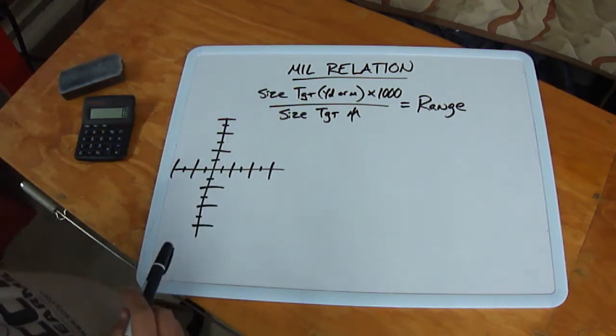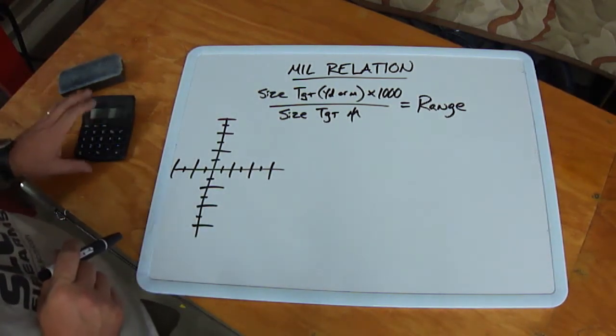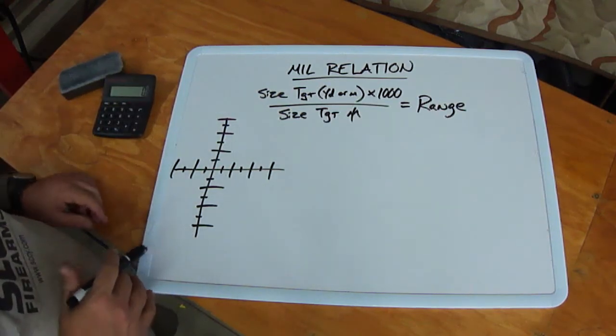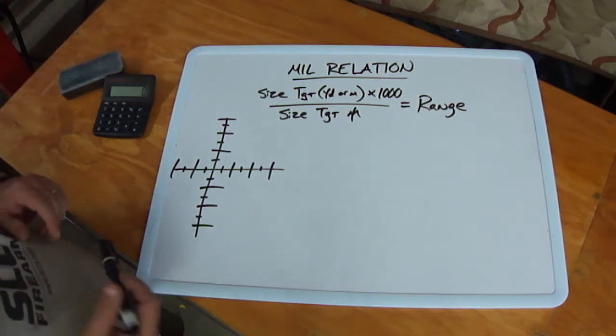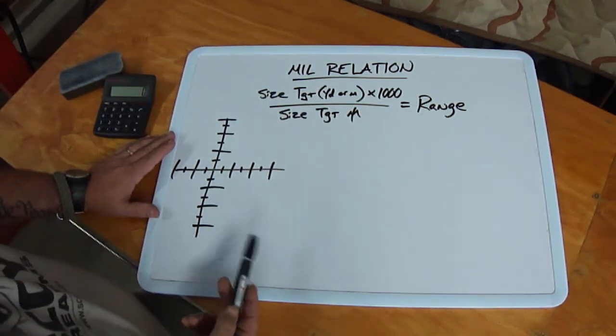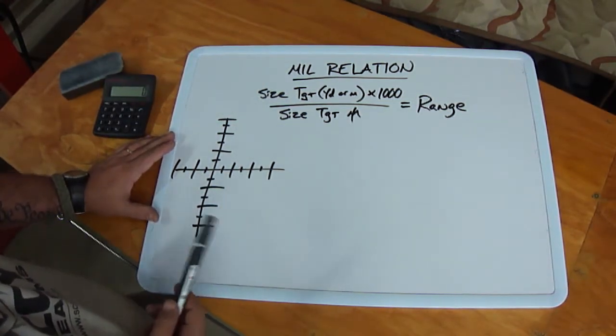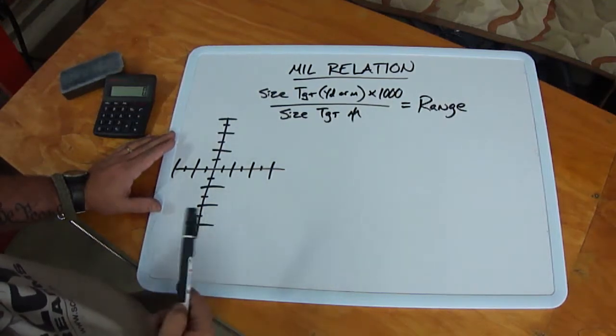I know this isn't the current formula that a lot of places are teaching. It's not what's in vogue. For me, this is the one I stick with. This is the old school formula. I like it because it's easier for me to run a rough number in my head if I need to and it works with yards or meters.